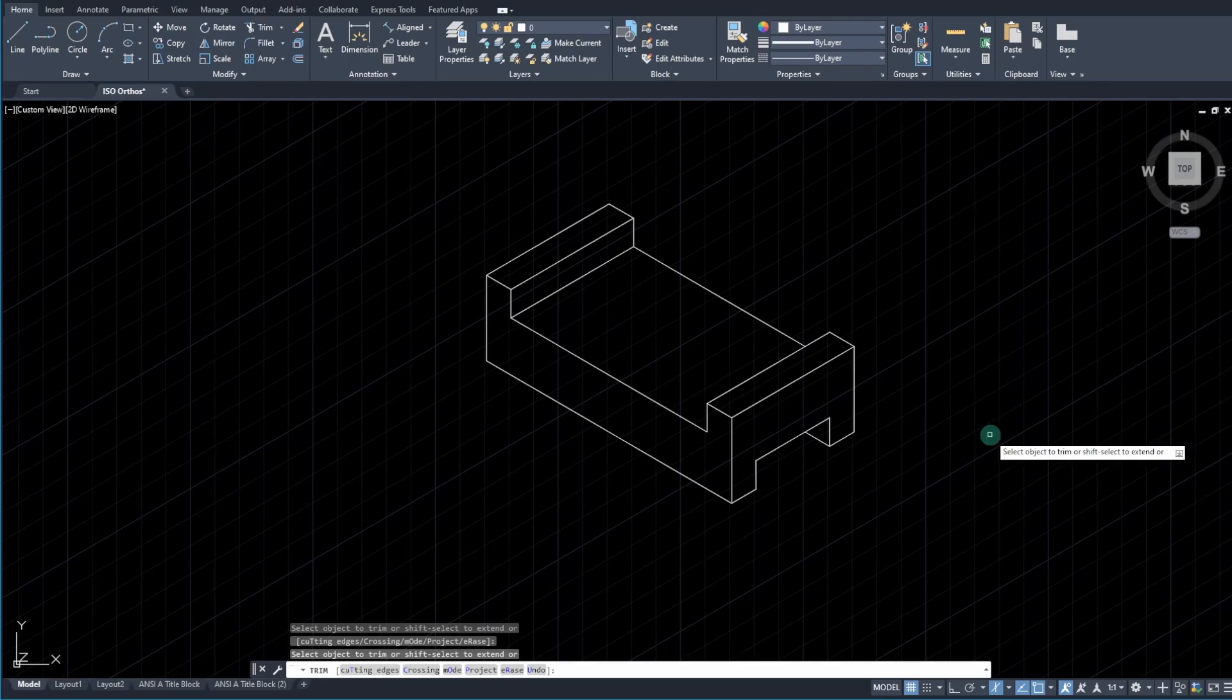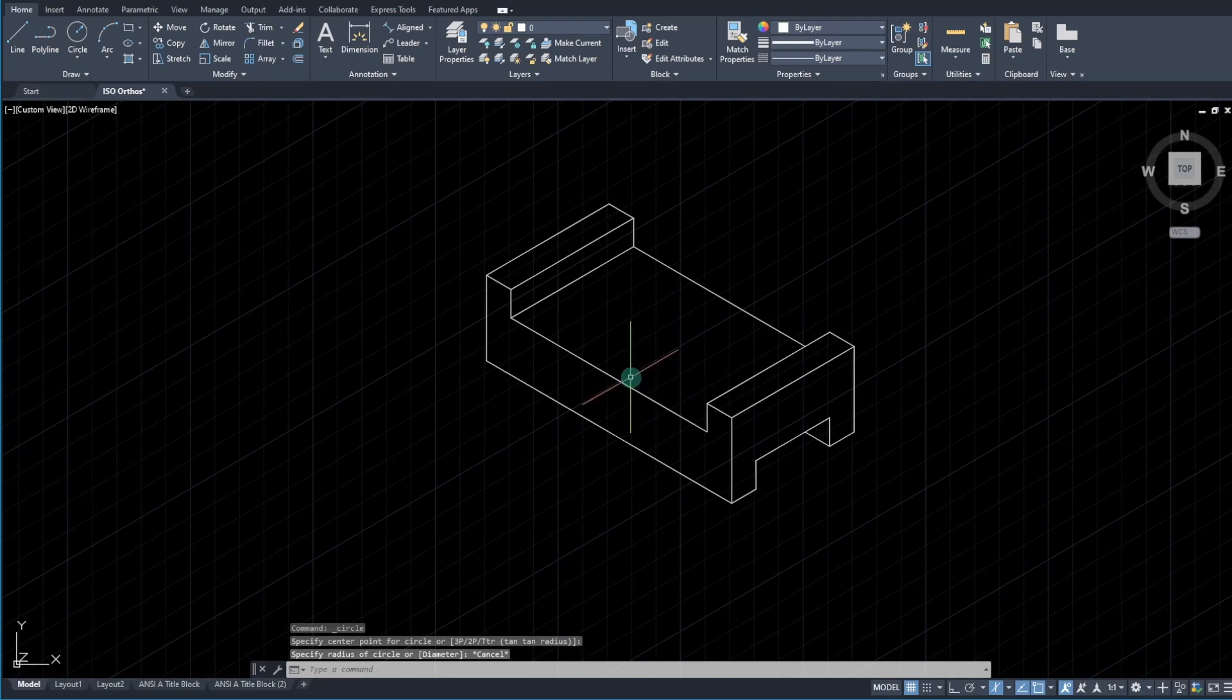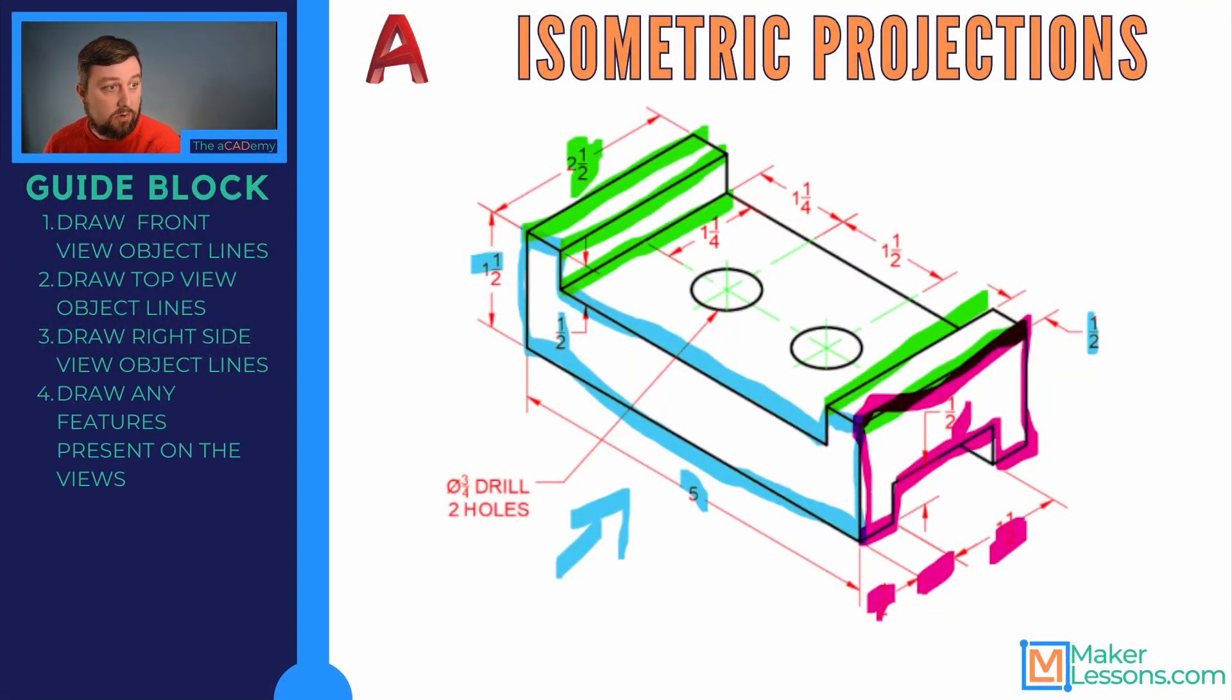a couple of things missing though, still, right? The circles on top. And how do we draw those? If we just drew a circle now, look at that. That is definitely not what it looks like. So we're going to have to do something special here. Let's just make sure we've got everything going on. Draw any features present on the view. So yeah, so we're up to the circles.